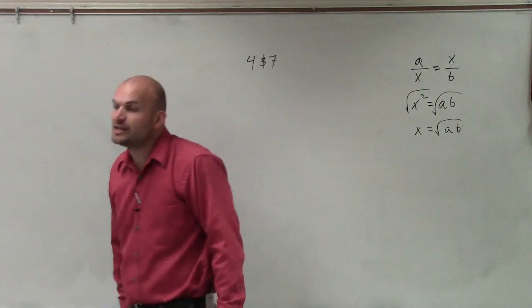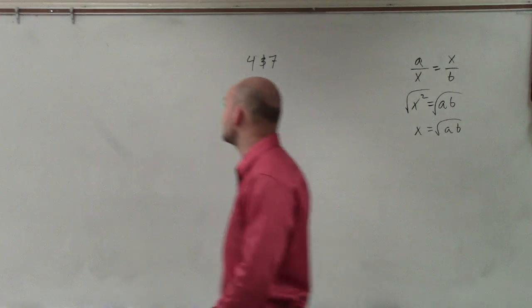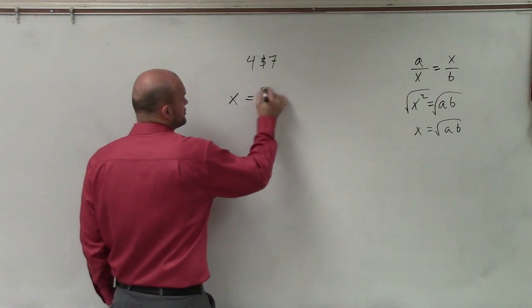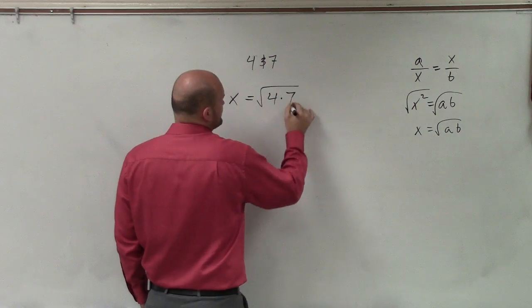So therefore, if I'm providing you with two values and we want to find the geometric mean, simply all we need to do is say the mean, which I'll just call x, is going to equal the square root of 4 times 7.